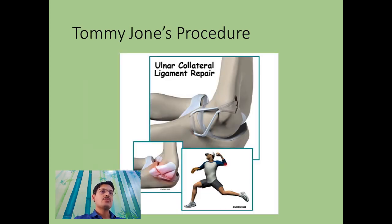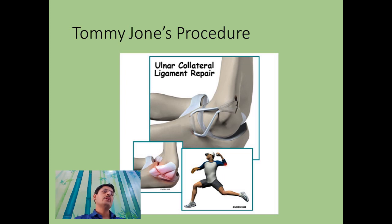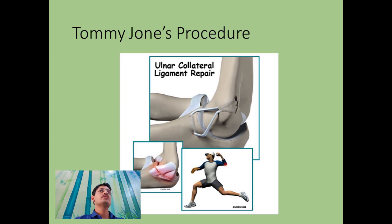These lesions can be addressed with a procedure called Tommy John surgery, described by Jobe. It incorporates the use of a palmaris longus tendon to create a new anterior bundle of the ulnar collateral ligament. The tendon is used in a figure-of-8 fashion from the sublime tubercle to the medial epicondyle. Results are so good that patients are sometimes able to pitch at a better level than their pre-injury level.